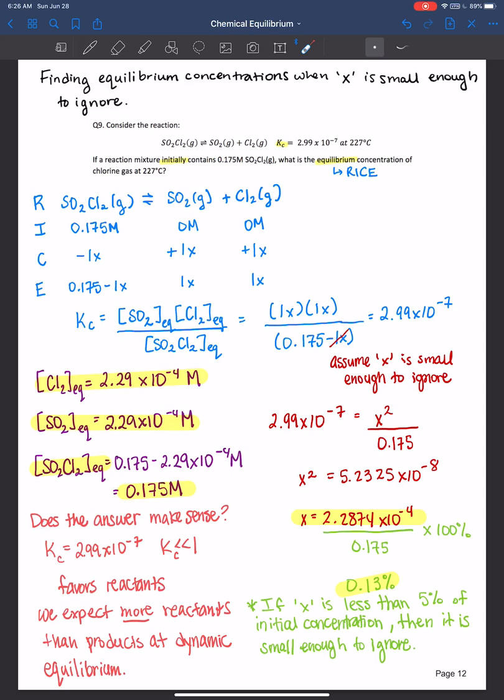Doing this will save you from making any kind of algebra mistakes or calculator mistakes. If you get the opposite, you know, let's say we had more products than reactants, then we think to ourself, what's happened here? Let me go back. Let me check my expression. Let me check my algebra to make sure that I didn't make a mistake in the setup.